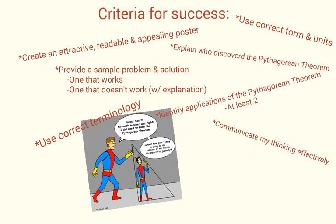These are some of the things I'll be looking at in your poster for the grading process: use of correct form and units, creating an attractive, readable, and appealing poster, explaining who discovered the Pythagorean Theorem, providing a sample problem and solution — one that does work and one that doesn't — with an explanation of why it didn't work, use of correct terminology, identifying at least two applications of the Pythagorean Theorem, and communicating your thoughts effectively.